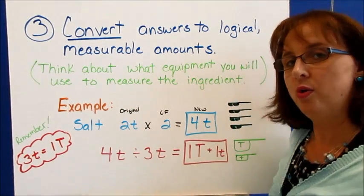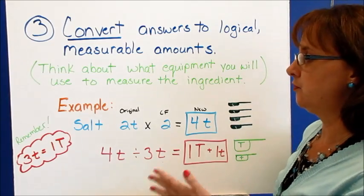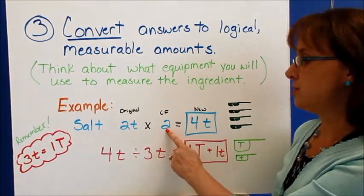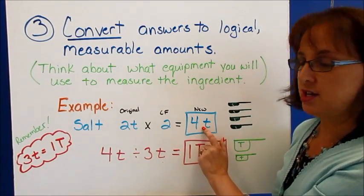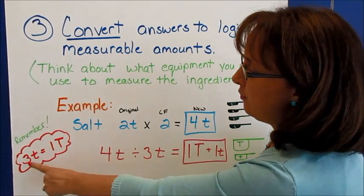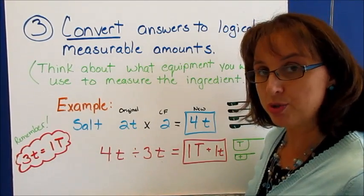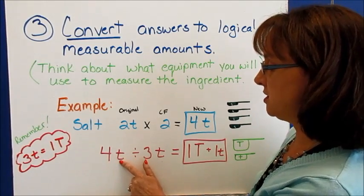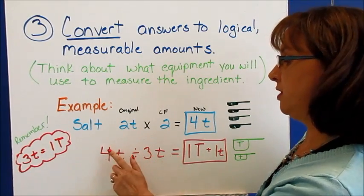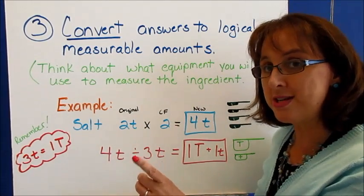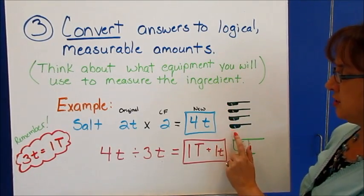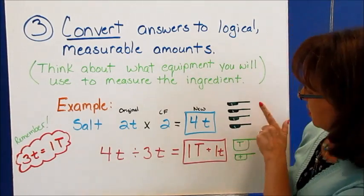Think about what equipment we're going to use to measure the ingredient. On our previous example we had salt — the original amount was two teaspoons, our conversion factor was two, so our new amount was four teaspoons. If we remember that three teaspoons equals one tablespoon, we can convert: four divided by three goes one time with one teaspoon left over. So we get one tablespoon plus one teaspoon.